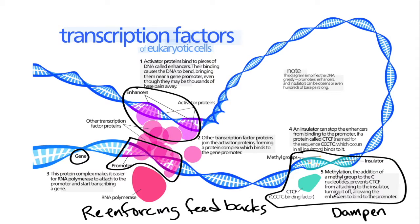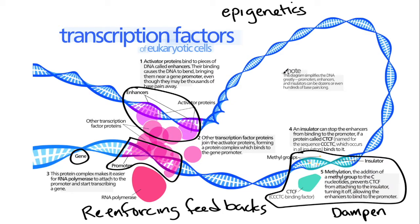A large part of what gets expressed in genes is controlled by the presence of these enzymes, the activator proteins, and these methyl groups. All of these extra factors are called epigenetics. They are the things that control which genes actually get transcribed to produce the messenger RNA, which is then turned into enzymes.